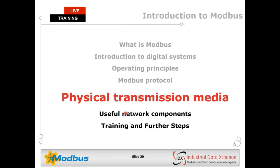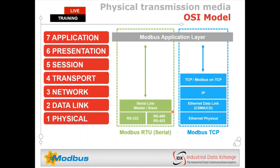Physical transmission media: now that we understand how the Modbus protocol works using slave addresses and function codes, we need a way to transfer data between devices. There are three main transmission media: RS-232 (Recommended Standard 232) for point-to-point Modbus RTU, RS-485 and RS-422 for multi-slave networks, and Modbus TCP using Ethernet-based systems.